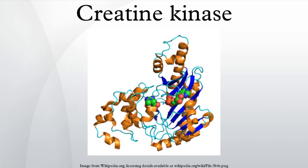This isoenzyme pattern differs in tissues. CK-BB is expressed in all tissues at low levels and has little clinical relevance. Skeletal muscle expresses CK-MM and low levels of CK-MB. The myocardium, in contrast, expresses CK-MM at 70% and CK-MB at 25–30%.